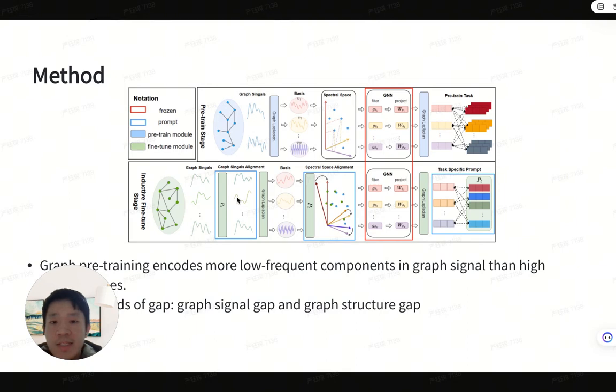We first analyzed the essence of graph pre-training stage, and we find that different kinds of graph pre-training strategies actually align the low-frequency components of graph signals. According to these observations, we concluded that in order to alleviate the gap between pre-training and fine-tuning, we need to align the low-frequency components in fine-tuning stage.